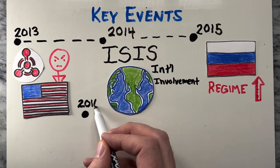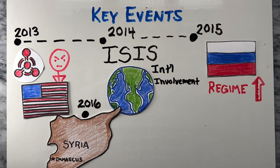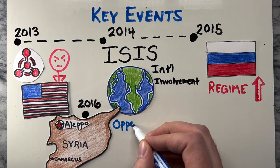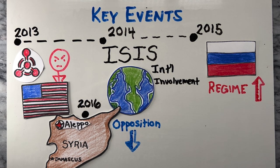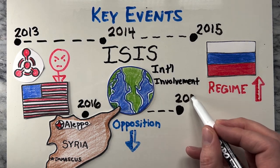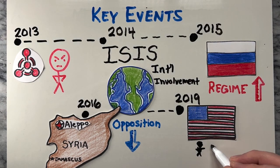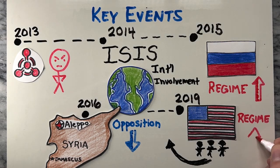The siege of Aleppo in 2016 saw the regime and its allies capture the city and deal a significant blow to the opposition. The US decision to withdraw troops from Syria in 2019 effectively ceded control of parts of the country to the Assad regime and its allies.